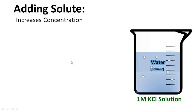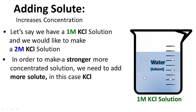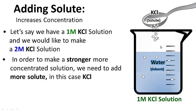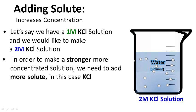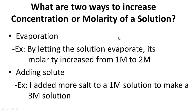Adding solute also increases concentration. Let's say we have a one molar KCl solution and we'd like to make a two molar KCl solution. In order to make a stronger, more concentrated solution, we simply add more solute — in this case, potassium chloride. Notice it's more concentrated now; there's more solute and we get a two molar KCl solution. The volume stayed the same, but the addition of more solute increased concentration from one molar to two molar. For your notes: what are two ways to increase the concentration or molarity of a solution?